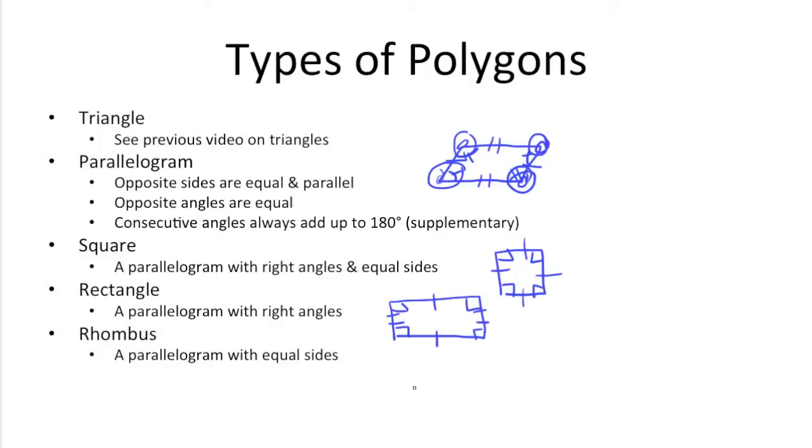And rhombuses, which are just parallelograms with equal sides, generally they look something like this. So all these sides are the same length.